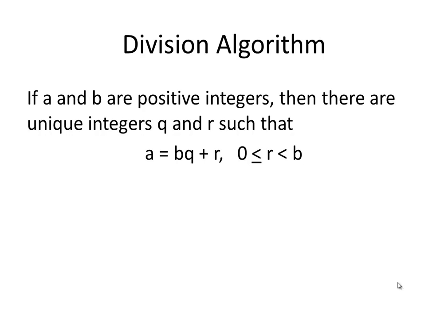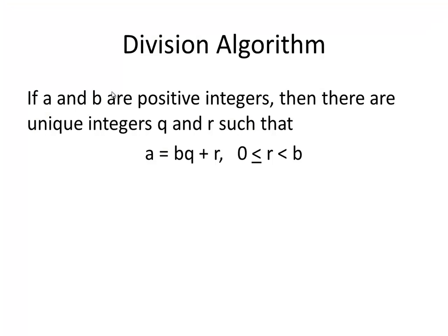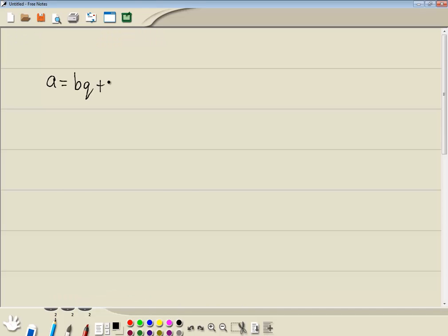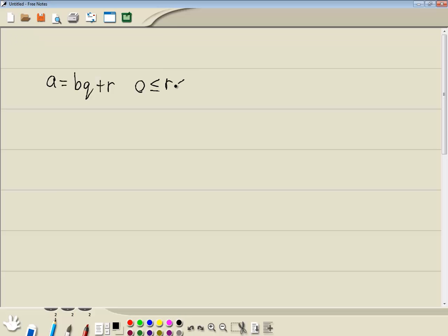Let's take a look at an example of that. First off, we've got A is equal to B times Q plus R. And 0 is less than or equal to R is less than B.